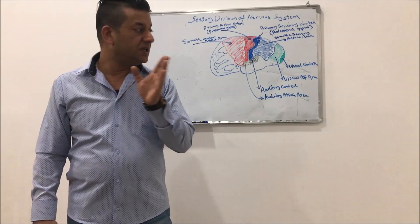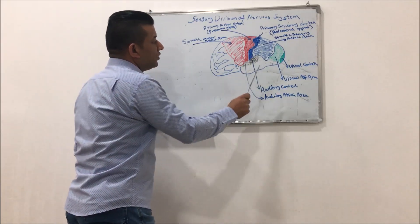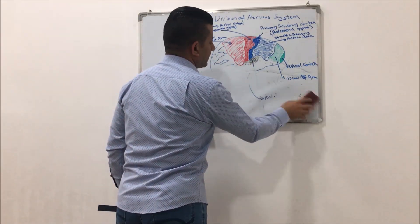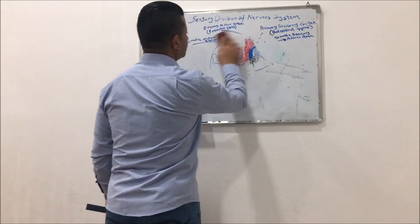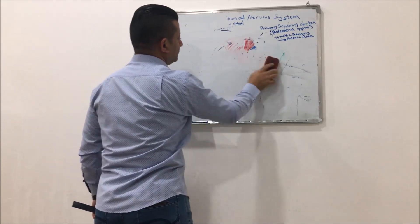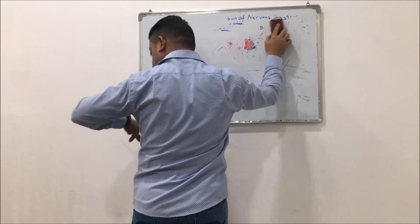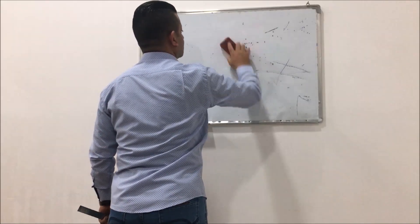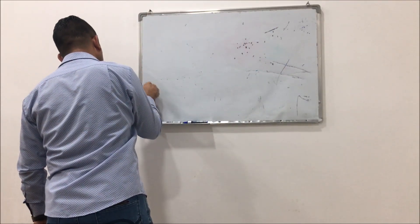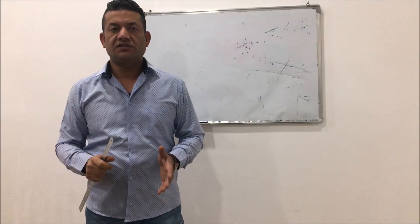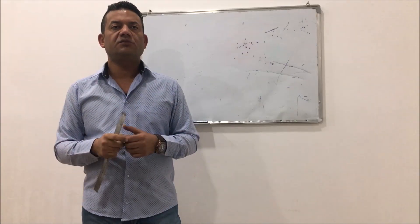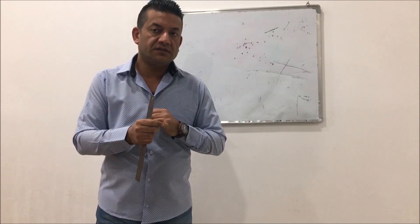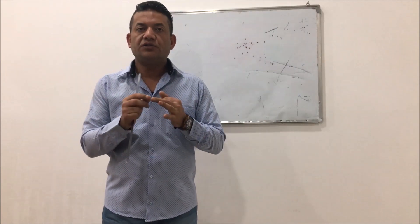It depends largely on the tracks where the nerve signals or nerve endings end in specific areas of the brain. The somatic sensations can be classified into different classifications, but the most important one is: mechanoreceptive sensations, thermoreceptive sensations, and nociceptive sensations.